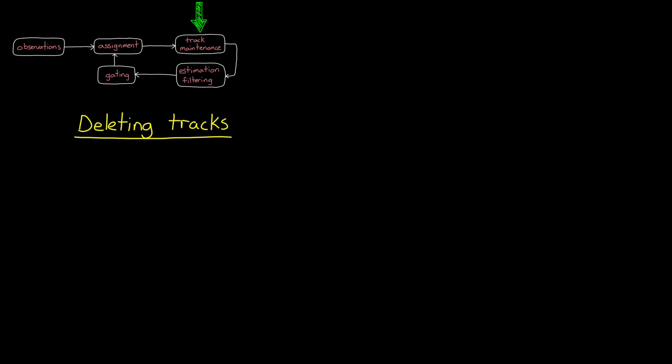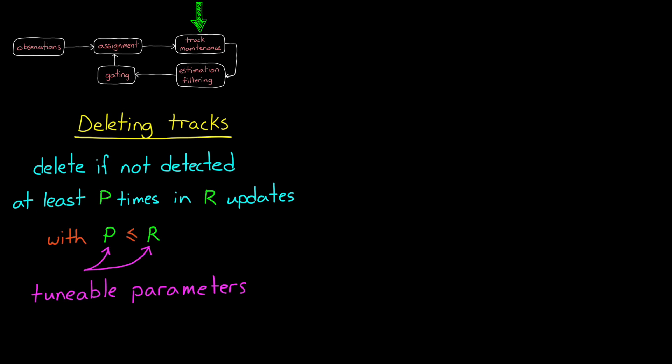Rather than saying an object is gone as soon as we miss a single observation, we could delete tracks only if a track has not been assigned to a detection at least P times during the last R updates. In this case, P and R are parameters that you can tune to your situation. So you might say, delete a track if it hasn't been detected at least four times in the last six updates.